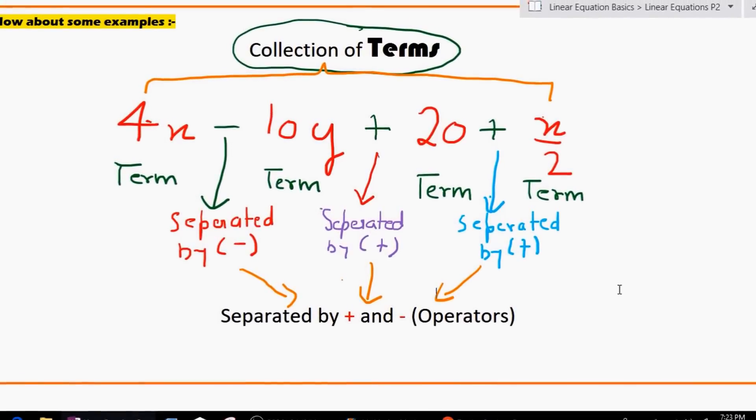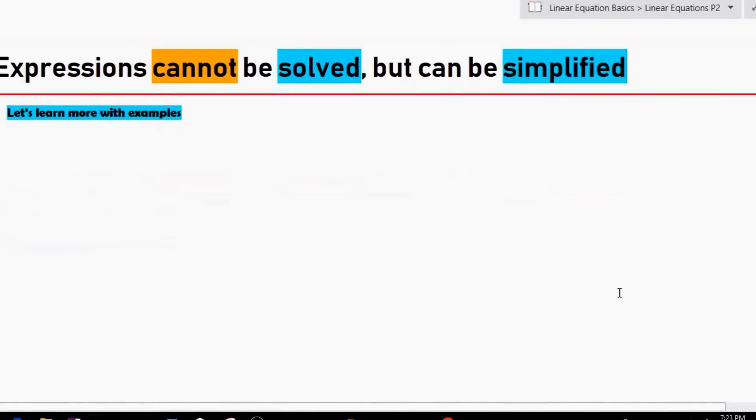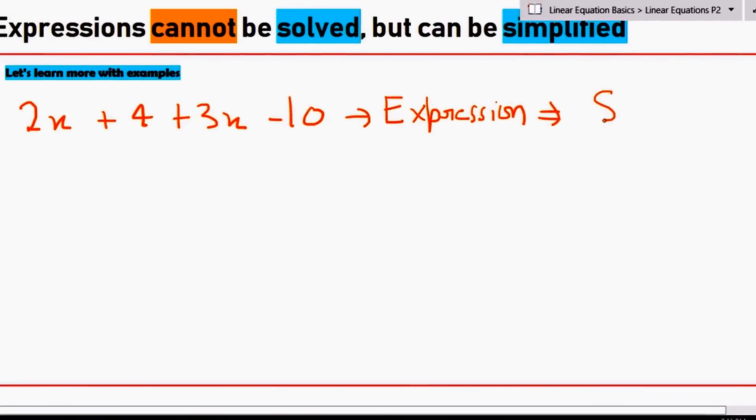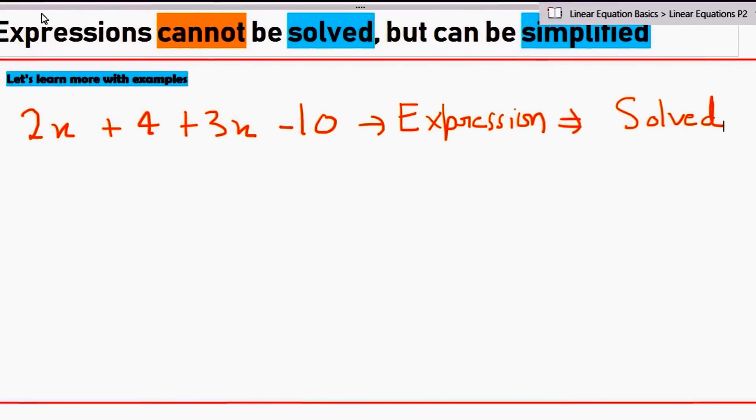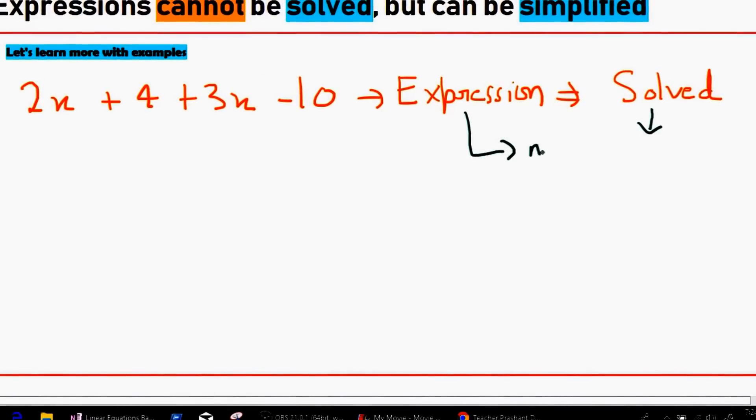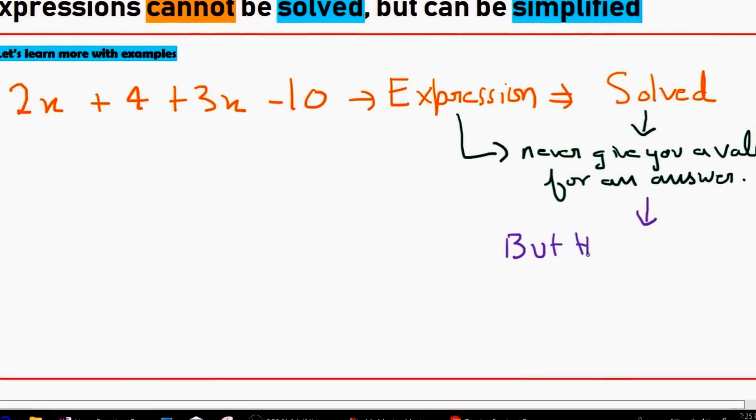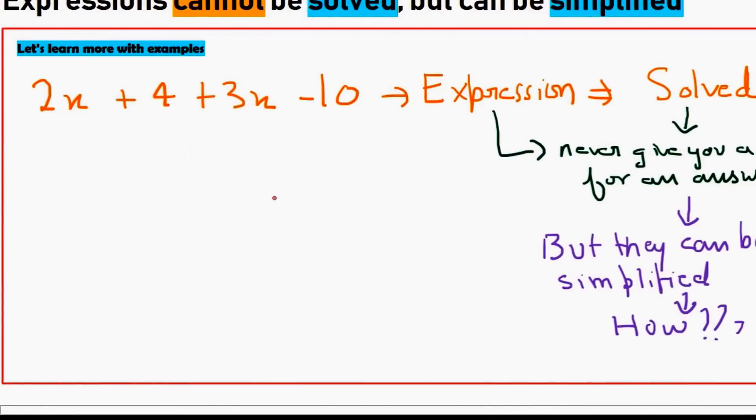Now let's go further into the term expression. Let me just tell you that expressions cannot be solved, they can only be simplified. I am going to tell you exactly why. Now let me write an expression right here. Let me write 2x plus 4 plus 3x minus 10. As I can say that this is an expression. And expressions cannot be solved. When I say solved, what do I mean? I mean that expressions will never give you a value for an answer. But they can be simplified. How they can be simplified? Let's go see.